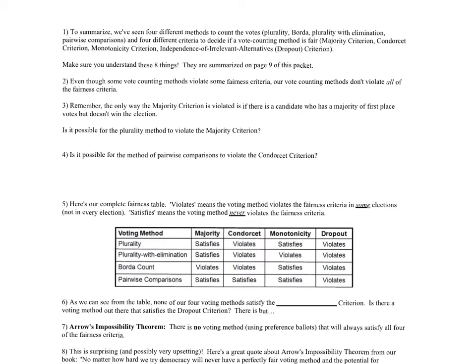Even though some vote counting methods violate some fairness criteria, our methods don't violate all of them. The majority criterion is only violated if there is a candidate who has a majority of first place votes but doesn't win. Is it possible for the plurality method to violate the majority criterion? If someone has a majority of first place votes they will most certainly have the most first place votes, because if you have more than half, less than half remains. So it is impossible for the plurality method to name a winner other than a majority candidate.